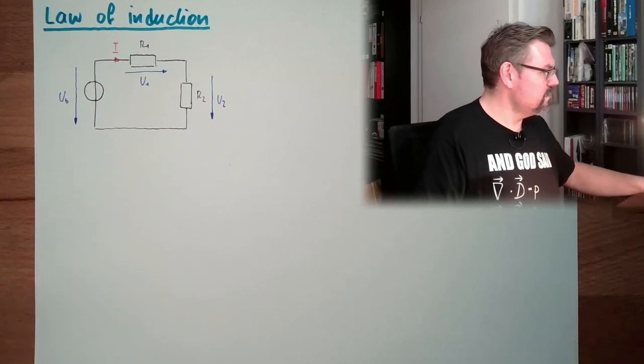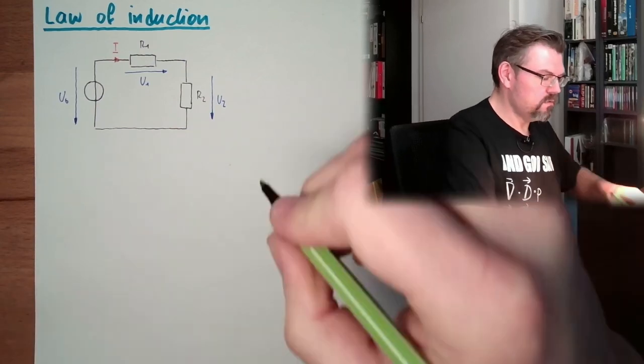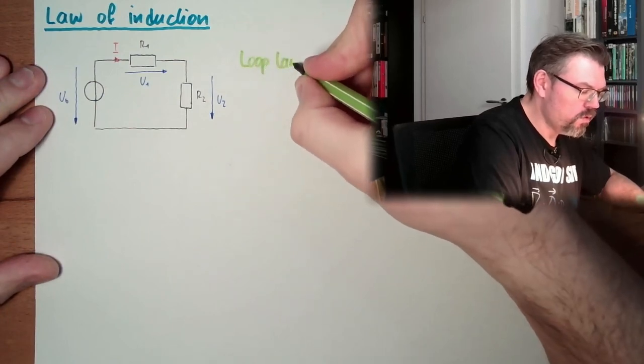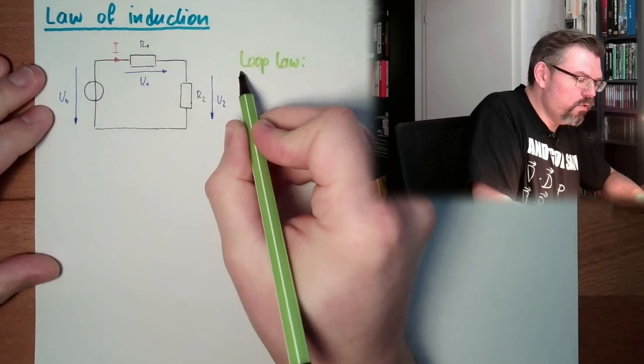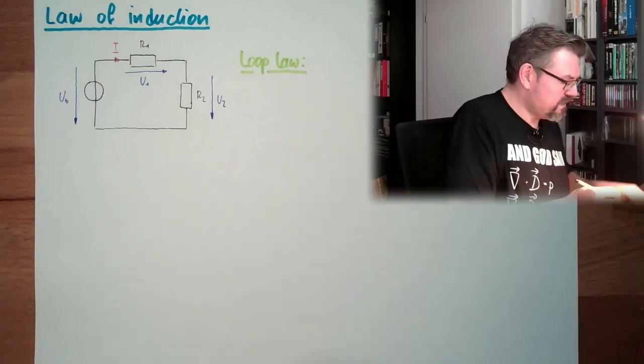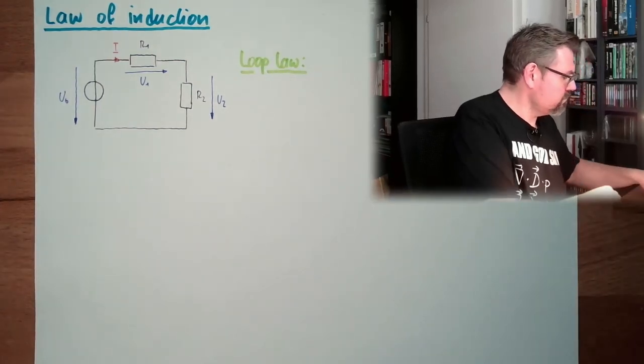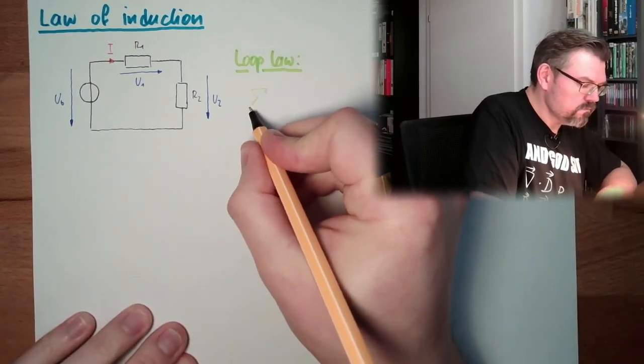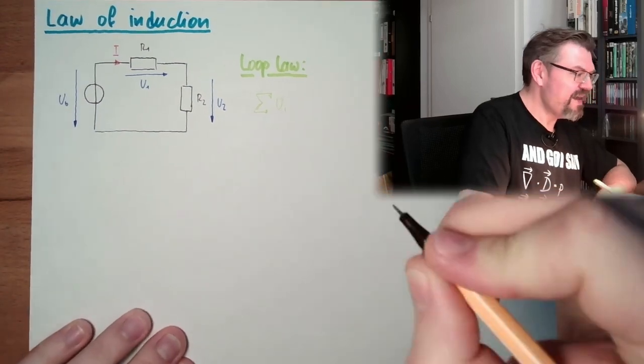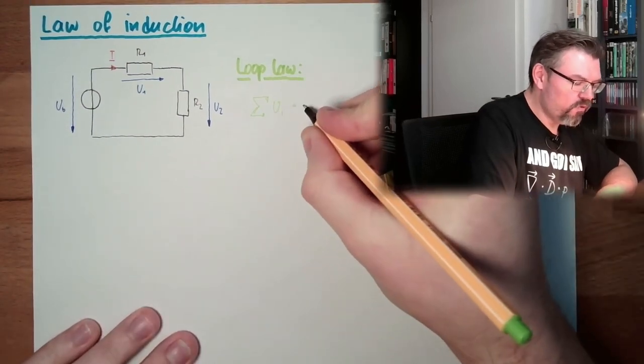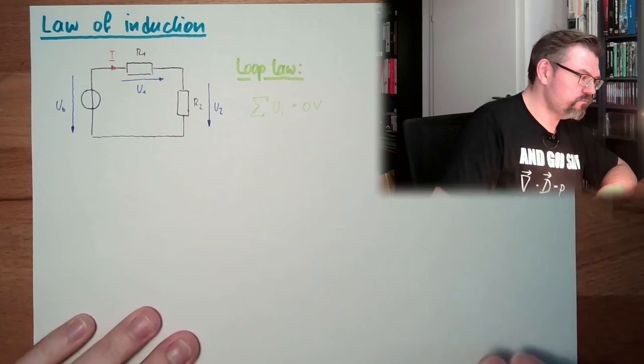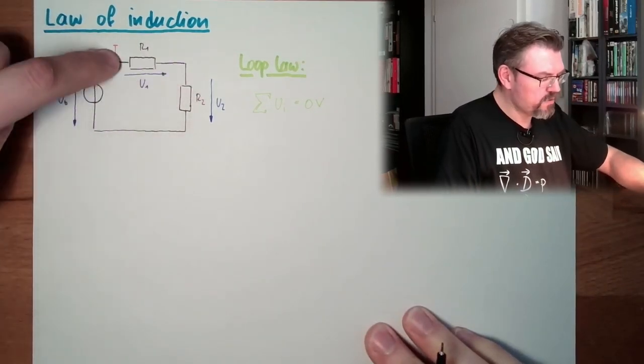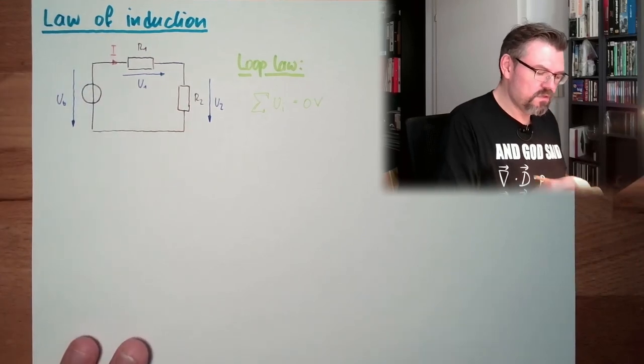What is the loop law? Kirchhoff's loop law. We said, the sum of all UIs inside a loop is zero volts. So in this case, this would be U0 minus U2 minus U1 is zero volts. This was the loop law.